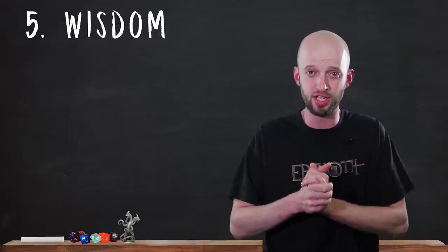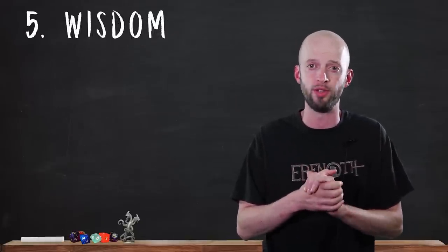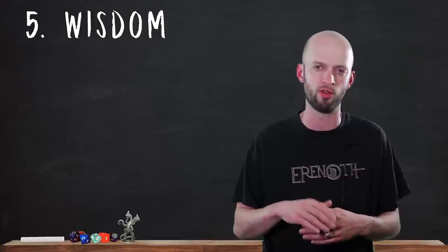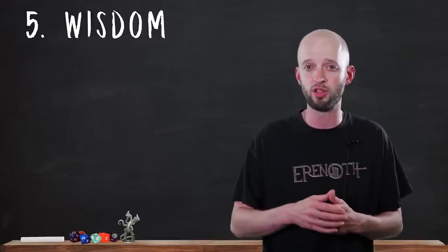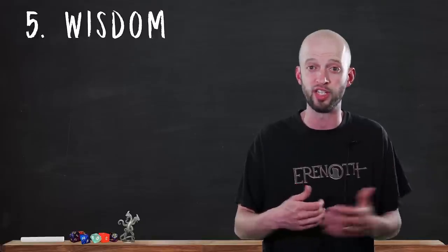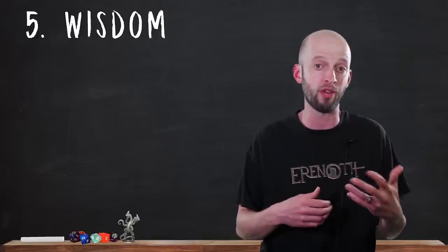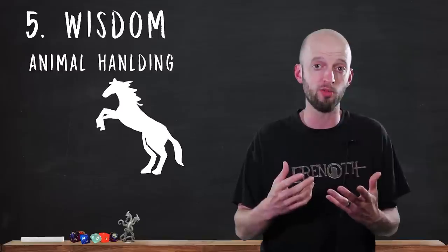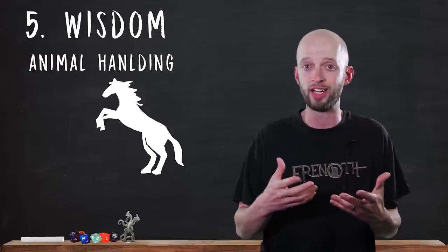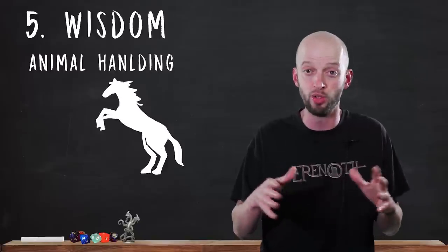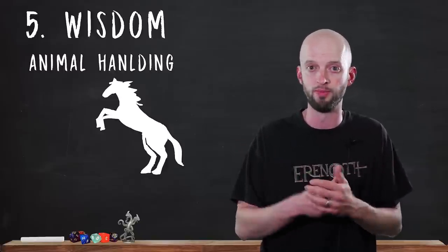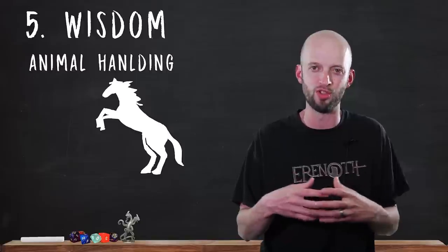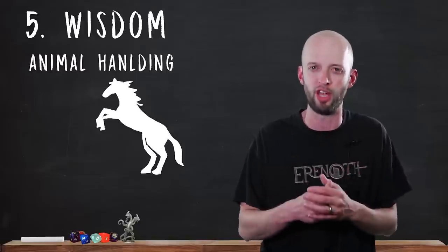The fifth ability, Wisdom. Wisdom measures how attuned you are to the world around you. Part of this I think of as street smarts. Someone with high wisdom has a natural intuition or perceptiveness. Wisdom checks could involve reading body language or someone's feelings, noticing things about the environment, or caring for an injured person. Skills associated with wisdom are, firstly, animal handling. This skill can be used when calming down a domesticated animal, trying to keep your horse or another type of mount from being spooked, or trying a daring maneuver while mounted. You may use it while trying to understand an animal's intentions. This all has to do with reading animals and being able to sort of communicate with them or direct them.